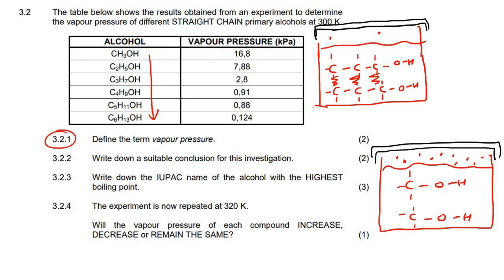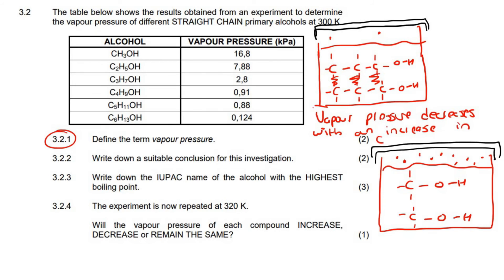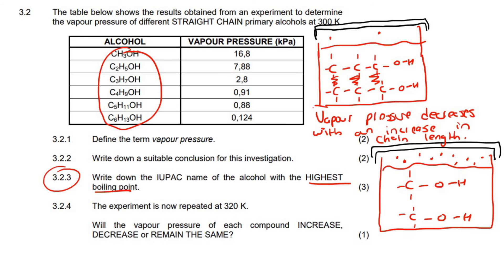So, write down a conclusion for this investigation. The conclusion will be: vapor pressure decreases with an increase in chain length. As you increase the chain length, you decrease the vapor pressure. The next question: write down the IUPAC name of the alcohol with the highest boiling point. What do you do when you boil something? You turn it from a liquid to a gas, so you have to be able to overcome all of those intermolecular forces.